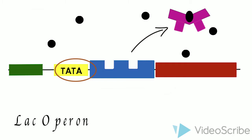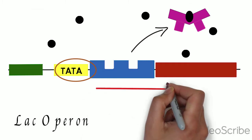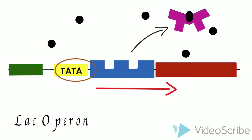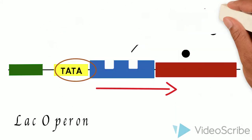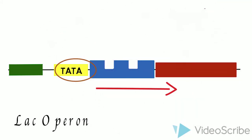This means that RNA polymerase is now able to move along the DNA and start producing lactase. As soon as there is lactase, it starts to digest all the lactose. With no lactose, the repressor now fits back in the operator and stops the production of lactase.